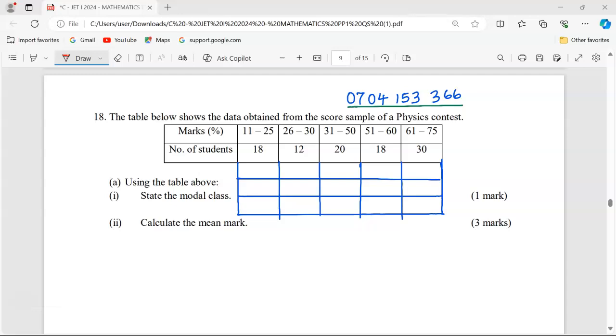Thank you for joining this lesson. We're going to study statistics, problem number 18. The table below shows the data obtained from the score sample of a physics contest. We have the marks in percentages grouped in classes and the number of students which represent the frequency for each class.